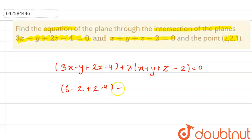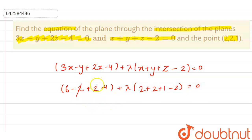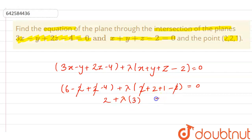...plus lambda times, at place of x we have 2, plus 2, plus 1, minus 2, equals 0. Now solving this: minus 2 cancels with plus 2, giving 6 minus 4 which is 2, plus lambda times, the 2 cancels with 2 leaving 2 plus 1 that is 3. So lambda times 3 equals 0 gives us lambda equals minus 2 by 3.